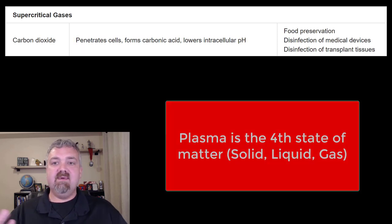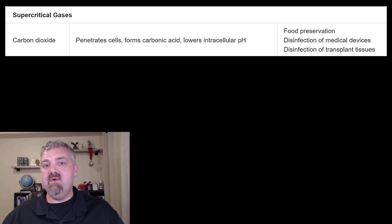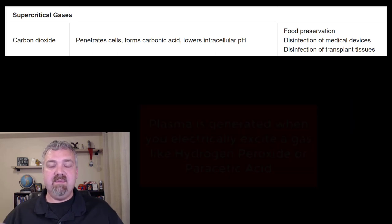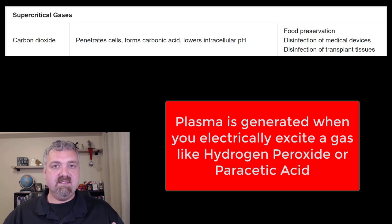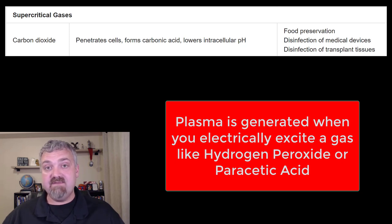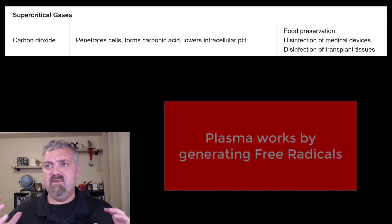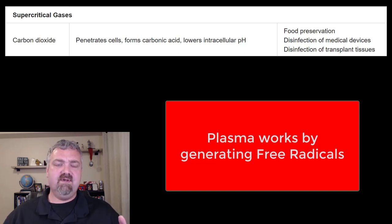The other one is plasma. Plasma is the fourth state of matter. You can actually generate plasma — we talked earlier about how peracetic acid can become a plasma, and so can hydrogen peroxide. If you electrically excite a gas, it forms this fourth state of matter called plasma. It generates, especially if you're using hydrogen peroxide or peracetic acid, tons of free radicals.